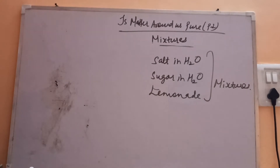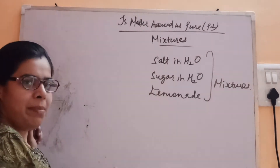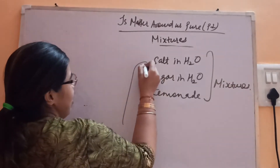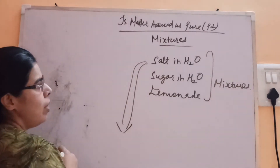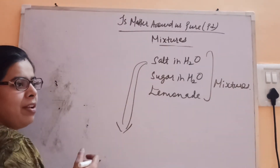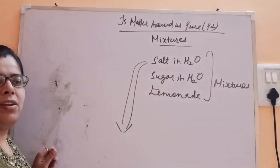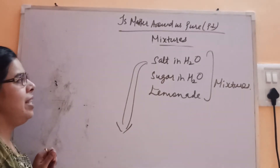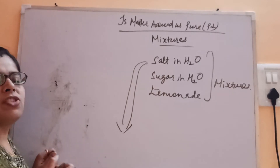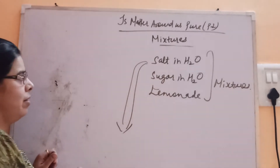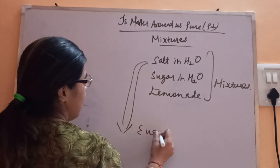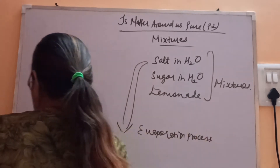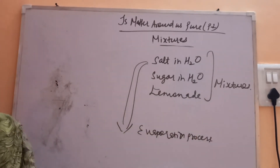As we said, a mixture can be separated by physical methods. For example, if we have a solution of salt in water and want to separate it, it is very easy — by evaporation. After evaporation, you will be left with the salt and the water will evaporate. So it is easy to separate, which is why we say it is possible to separate mixtures by physical methods, such as the evaporation process.